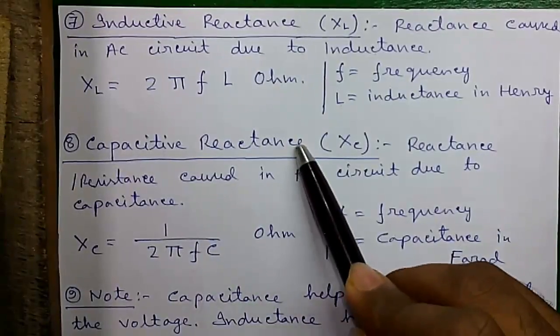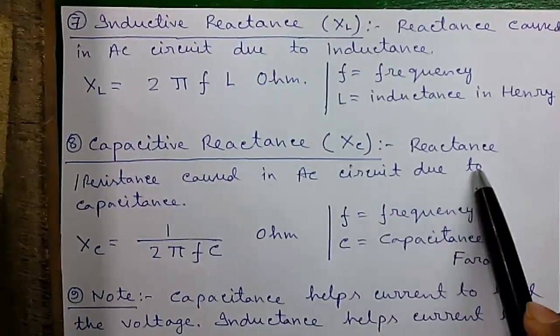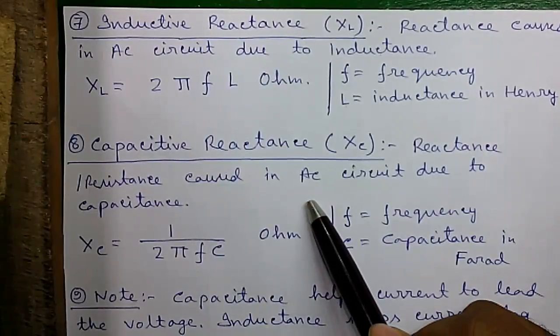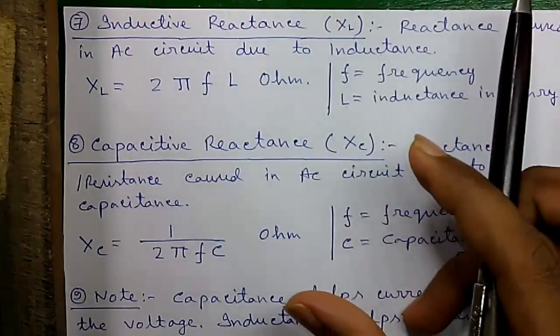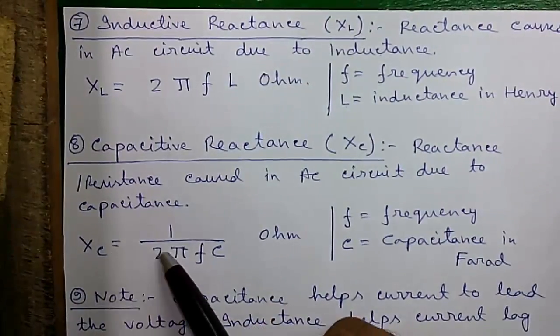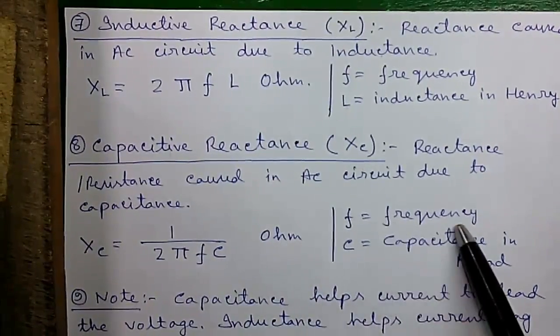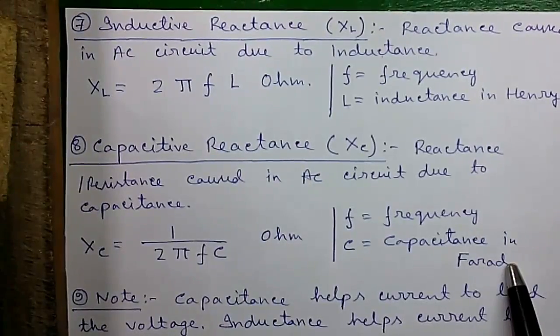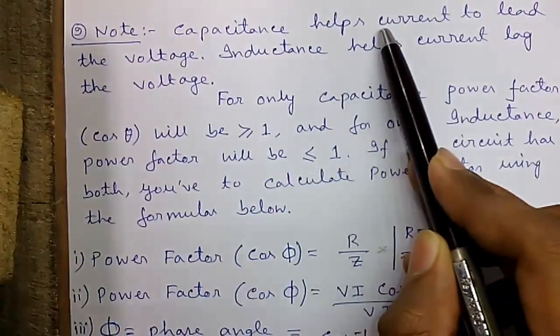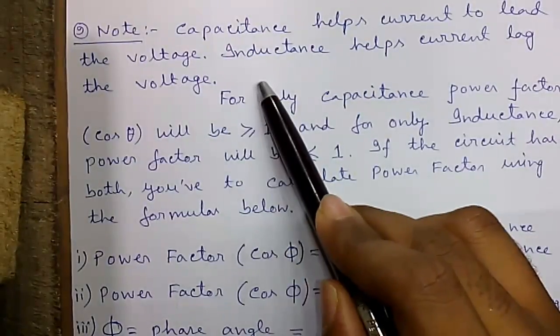Formula number 8, capacitive reactance or XC equals reactance or resistance caused in the AC circuit due to capacitance present in the circuit. One common example of capacitance in your home is the condenser or capacitor which is installed in your ceiling fan. XC equals 1 divided by 2 pi FC ohm. F is the frequency and C is the capacitance in Farad.